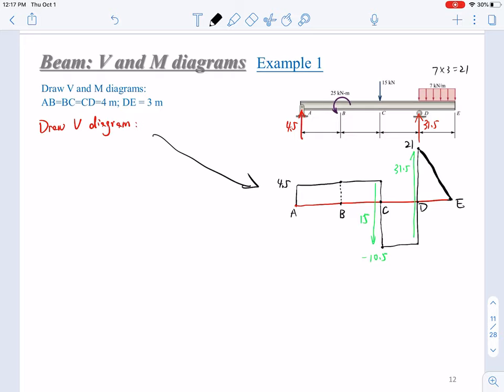Then based on this V diagram, we can draw M diagram. How to draw this M diagram, as we mentioned, we will need to calculate the areas in the V diagram. Here we will have A1, A2, A3, A4. We have these four areas.